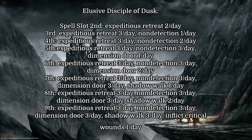The Shadow Dragon pact is called the Elusive Disciple of Dusk. For the cost of a 2nd-level spell slot, the sorcerer can cast Expeditious Retreat twice per day. A 3rd-level slot adds Expeditious Retreat three times per day and Non-detection once per day. Going up to a 5th-level slot: Expeditious Retreat three times, Non-detection three times, Dimension Door once. A 7th-level slot adds Shadow Walk once per day on top of those. And a 9th-level slot grants Expeditious Retreat three times, Non-detection three times, Dimension Door three times, Shadow Walk three times, and Inflict Critical Wounds once per day. I'll detail Dragon Pacts more in another video.